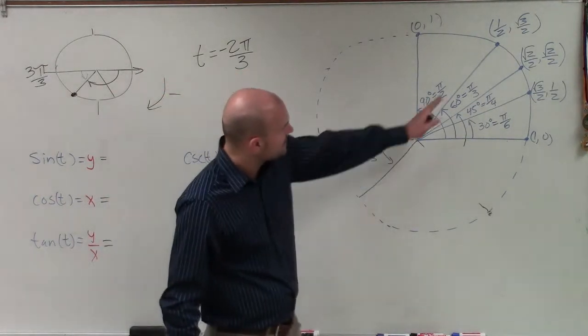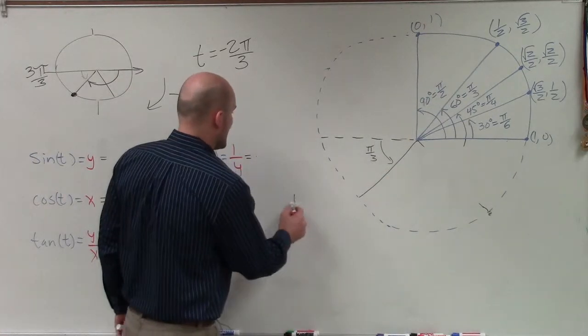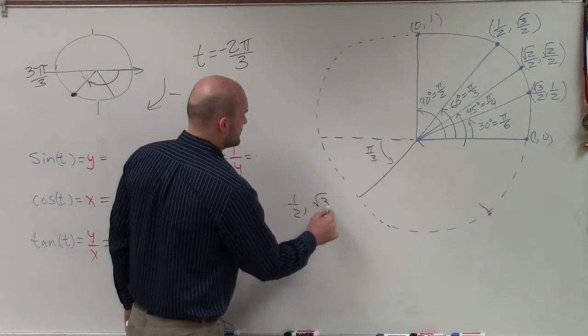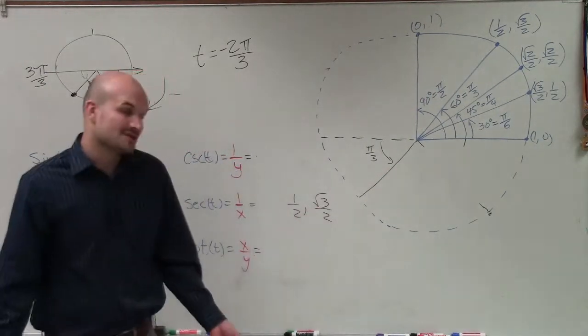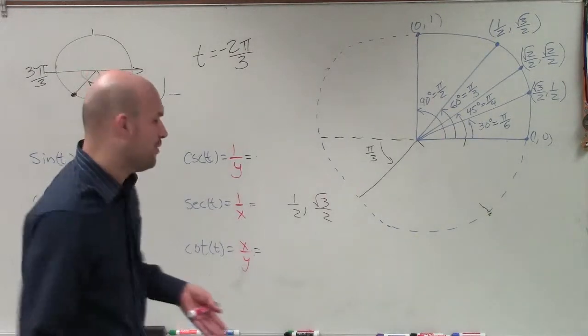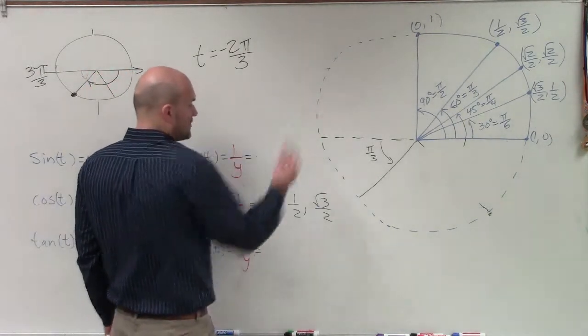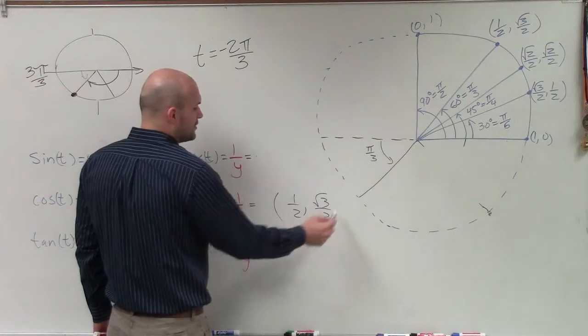So therefore, it's a direct reflection of my point 1 half, comma, square root of 3 over 2. Now, when I'm going to evaluate this point, I notice that in the first quadrant, we know they're both positive. But in the third quadrant, we also need to represent that.